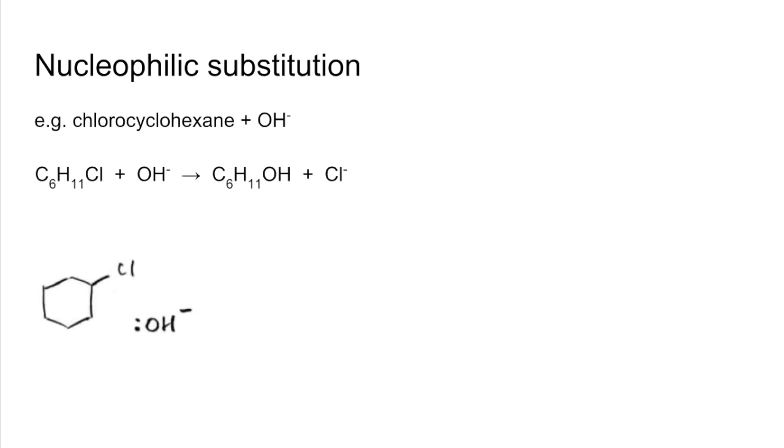So we look at the mechanism now. The carbon chlorine bond in the chlorocyclohexane will have a dipole across it because of the higher electronegativity of chlorine. The hydroxide ion is going to act as a nucleophile, an electron pair donor, and it's going to donate that pair of electrons on the oxygen to the slightly positive carbon. And that's going to repel the pair of electrons in that carbon-chlorine bond completely onto the chlorine and break the bond by heterolytic fission.